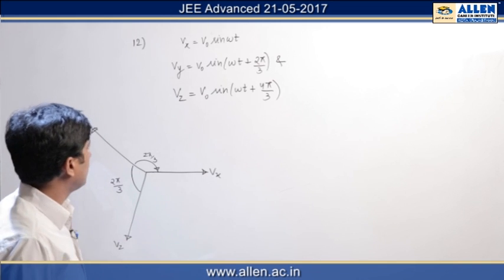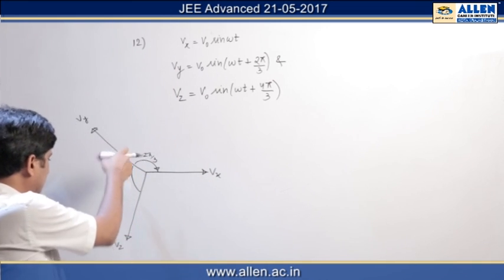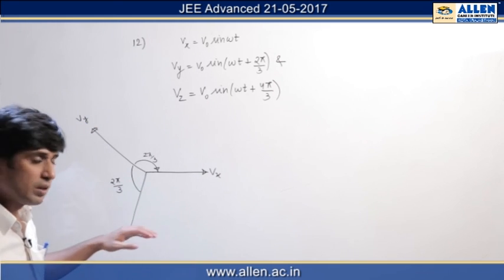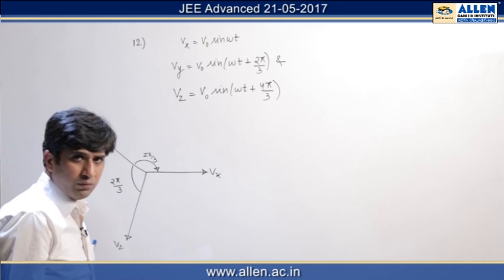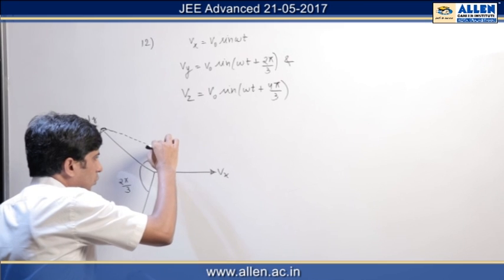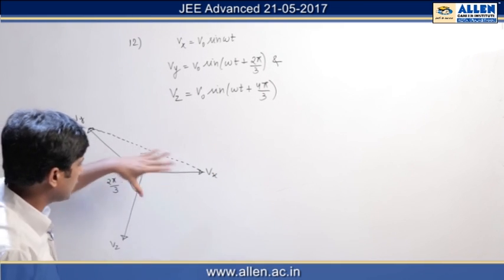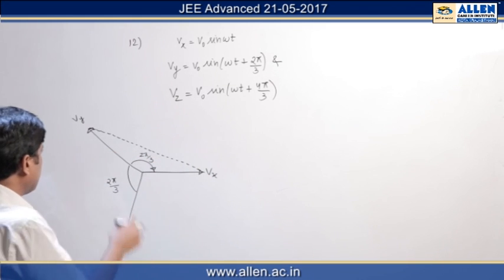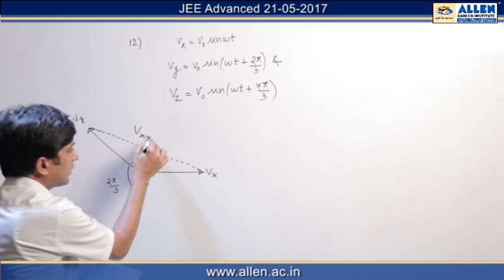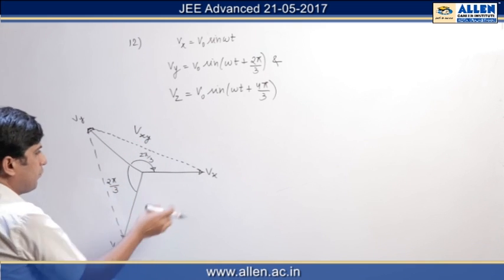Now we have to find difference of vx and vy, difference of vy and vz, and difference of vz and vx. By vector subtraction, we can easily say that the magnitude of the difference will be equal to the length joining head of the vx vector and vy vector. In the same manner, this will represent vxy, the maximum value of vxy obviously.